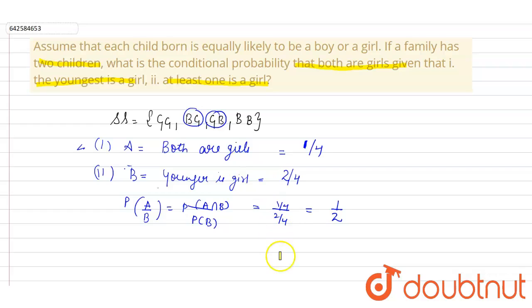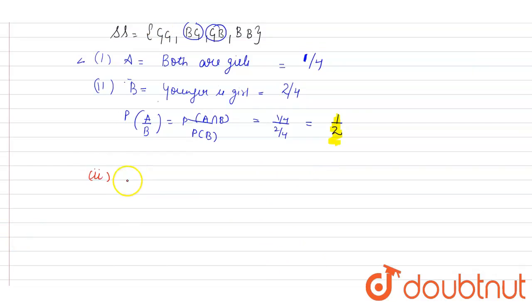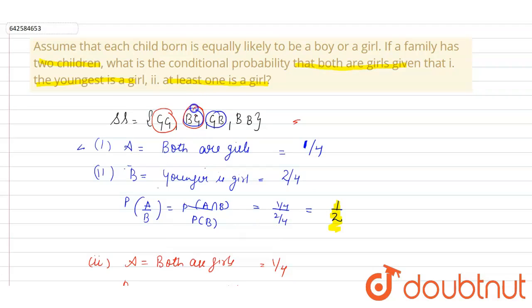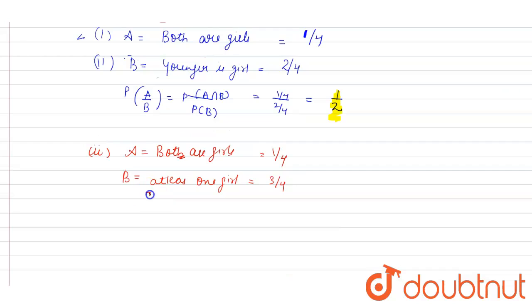This is the answer for the first part. For the second part, at least one should be a girl. So again, let's say A equals both are girls, and B equals at least one girl. For both are girls, the case is only 1/4, and for at least one girl, we have 3/4.